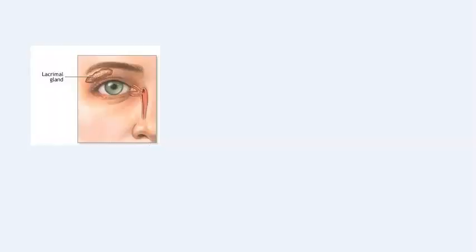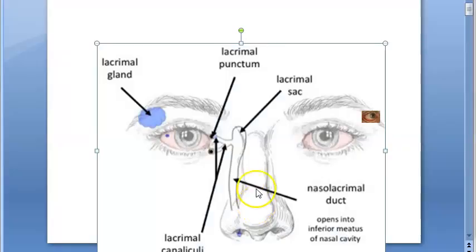Looking at this image, it is showing the nasolacrimal duct — DBL: downward, backward, lateral.